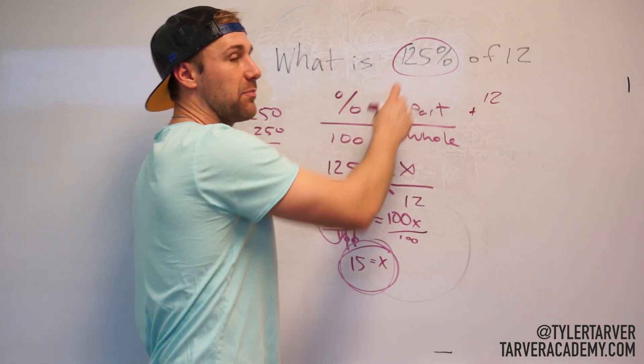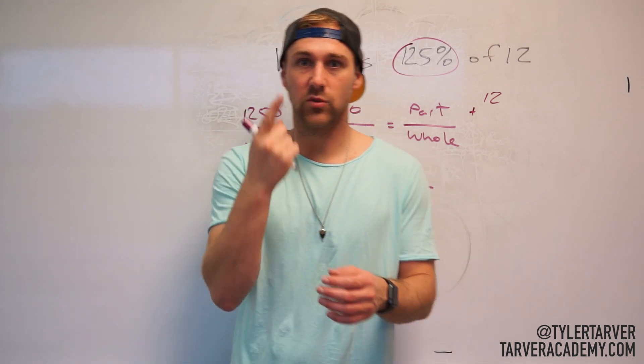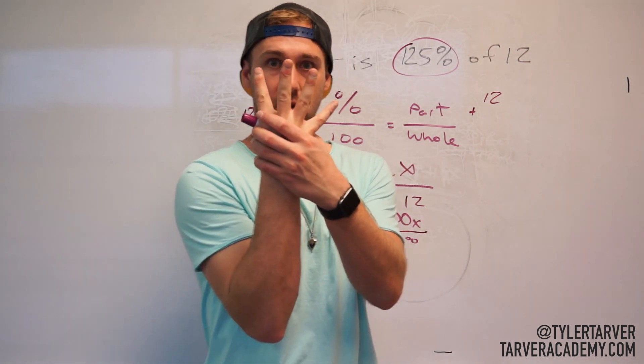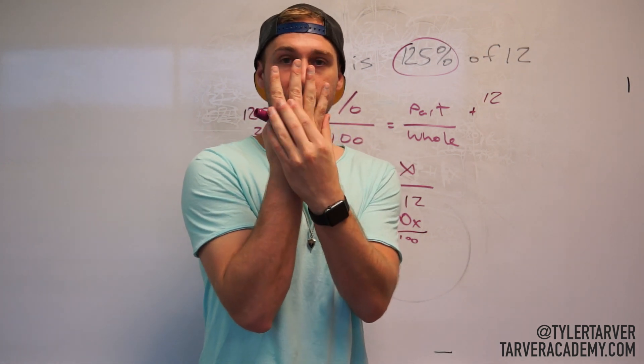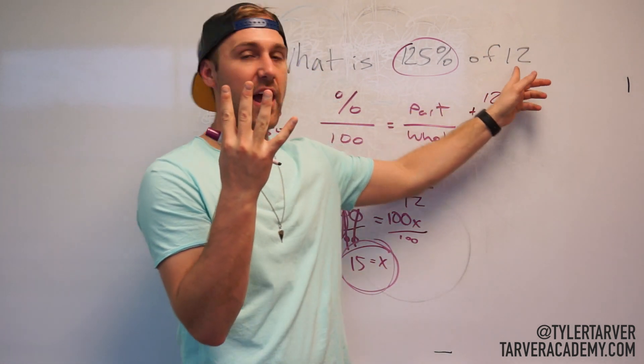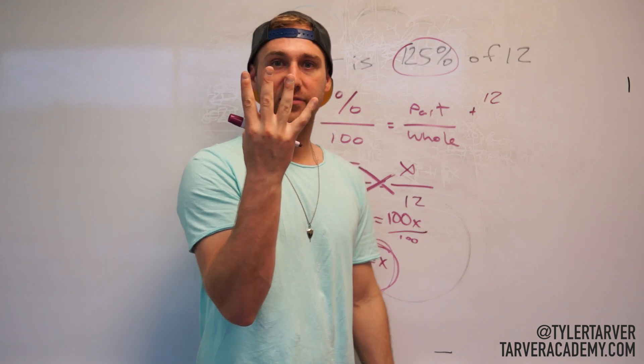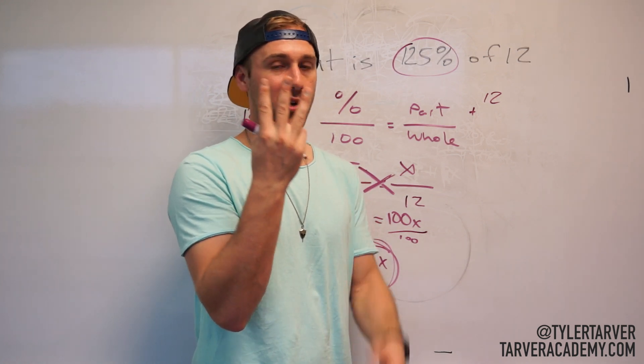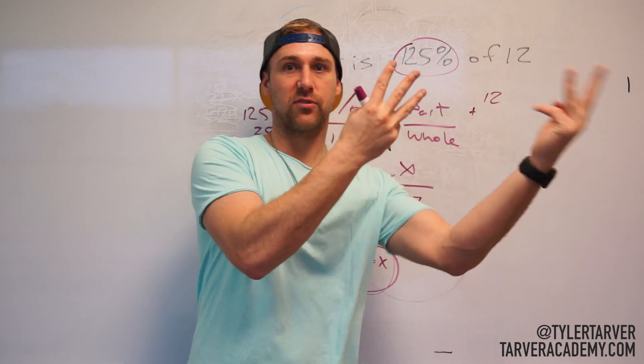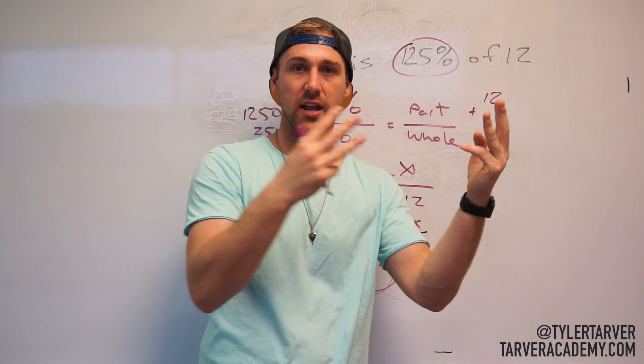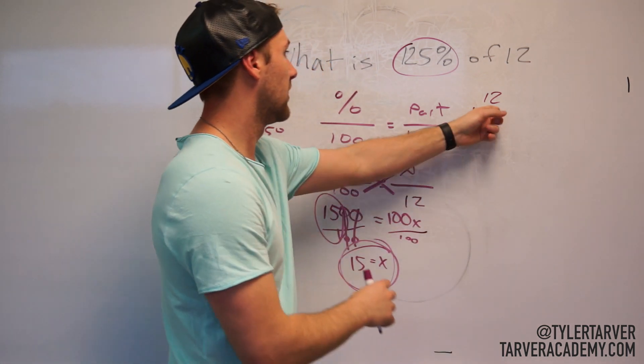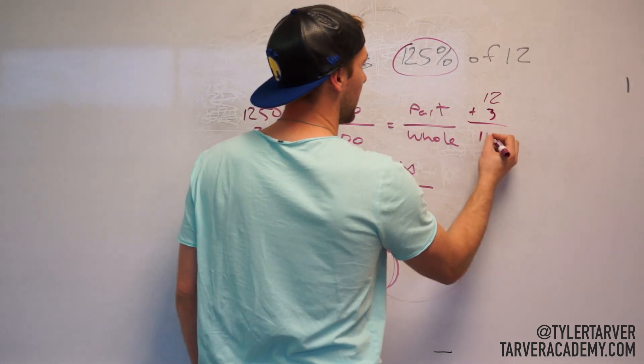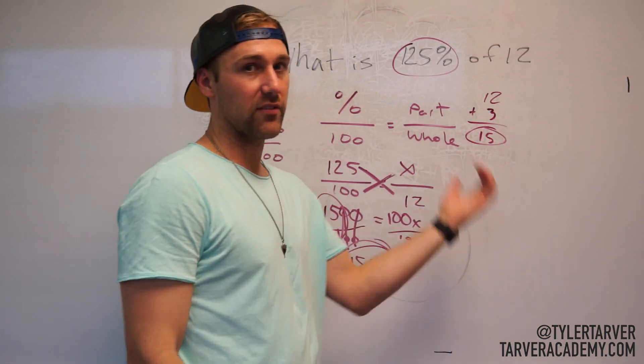So I just broke down 12. 12 divided by 4 is 3. That means four chunks of 3 make my 12. So if I'm pulling out 25% of that, I'm adding up that 3, and that's 15. So you could have done that as well.